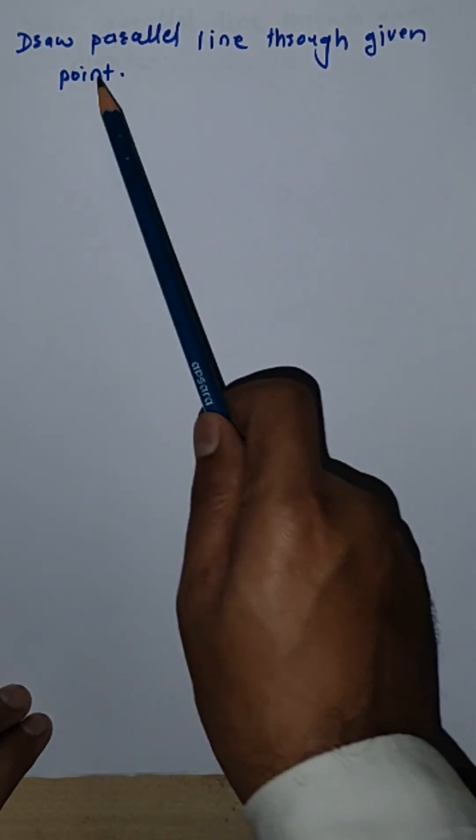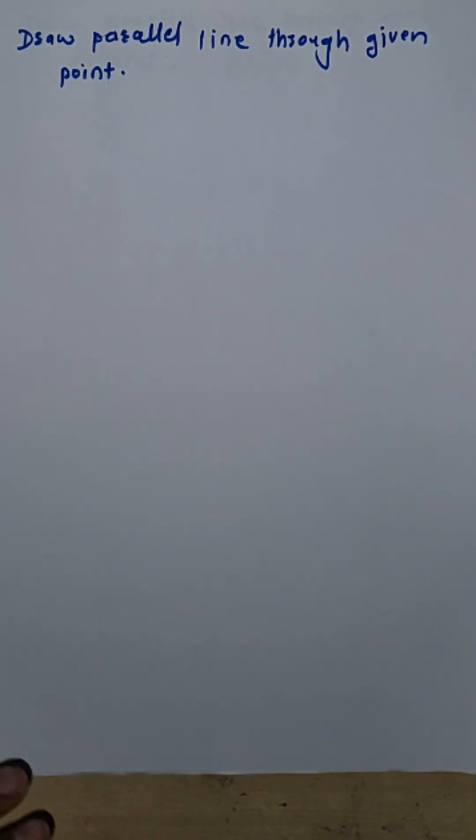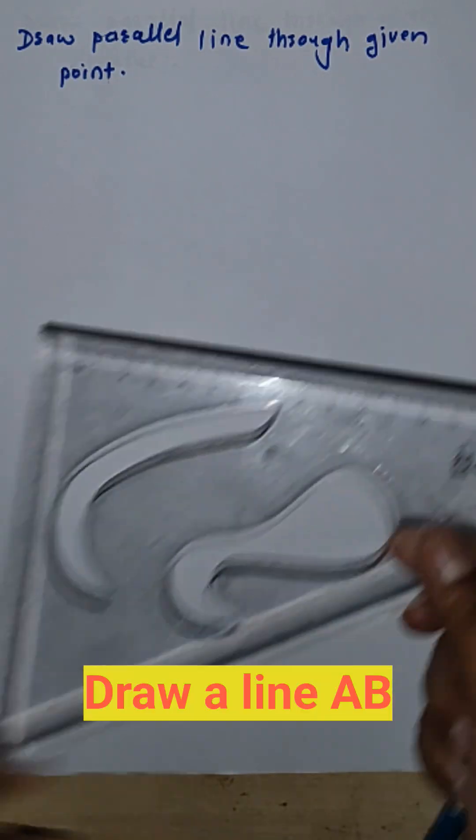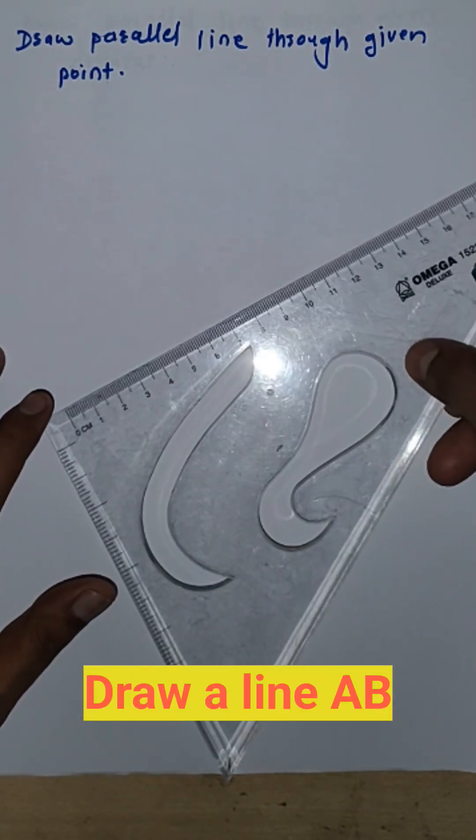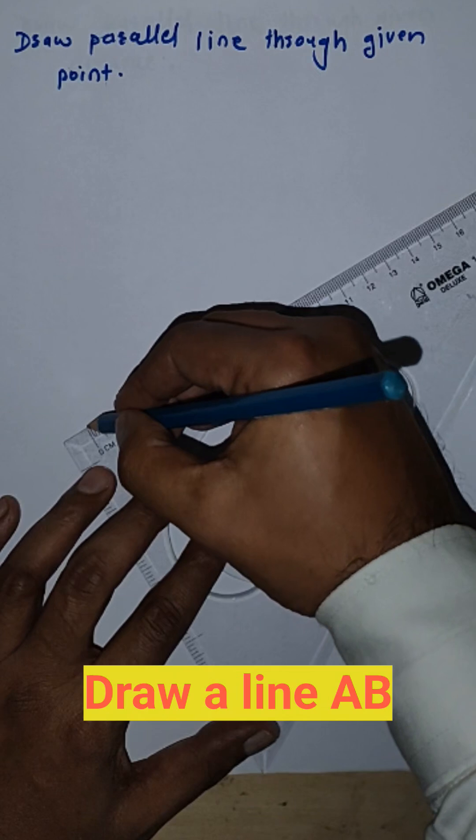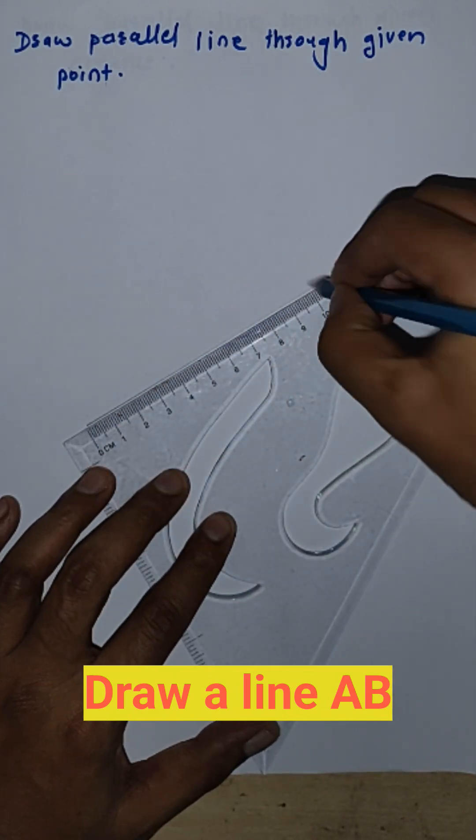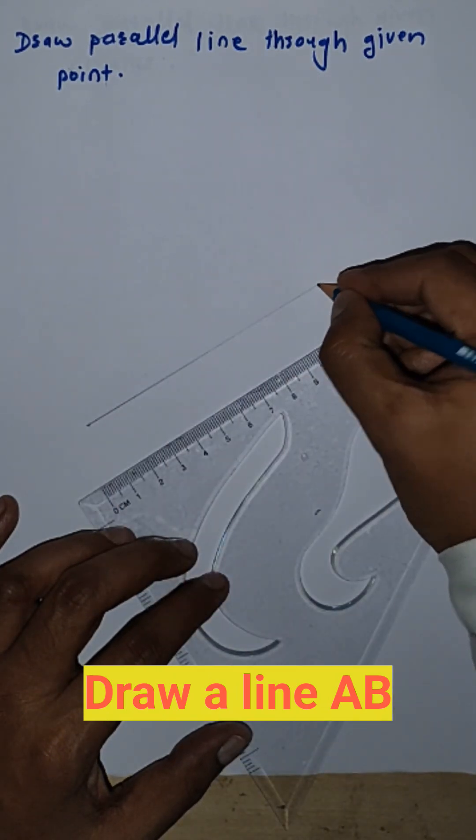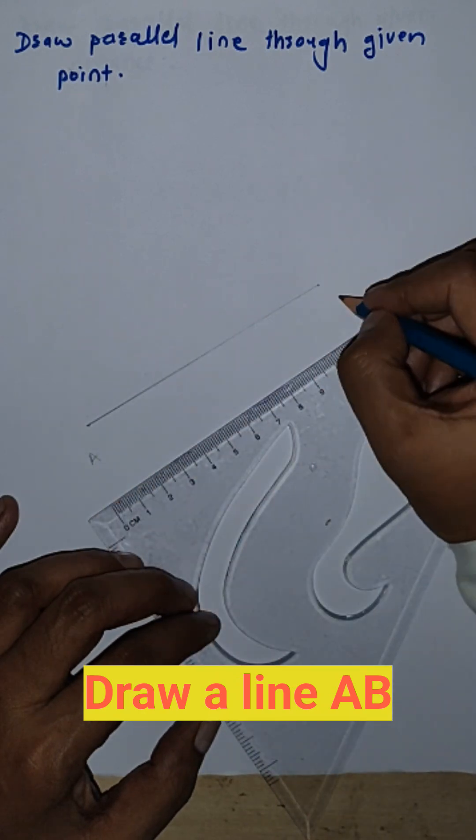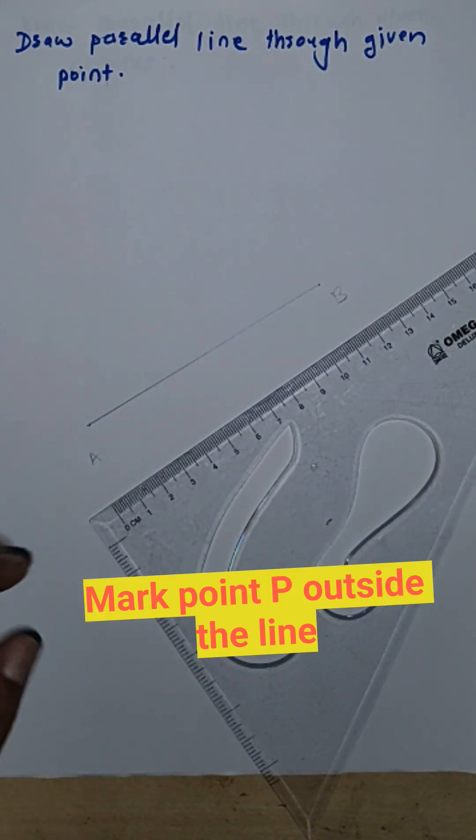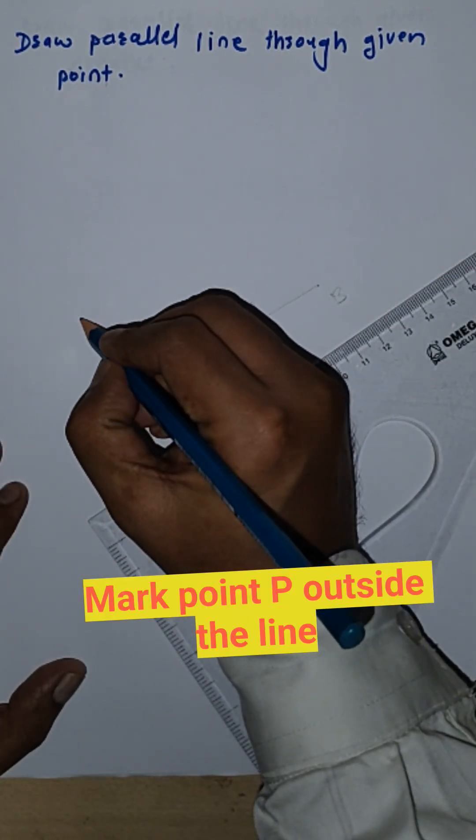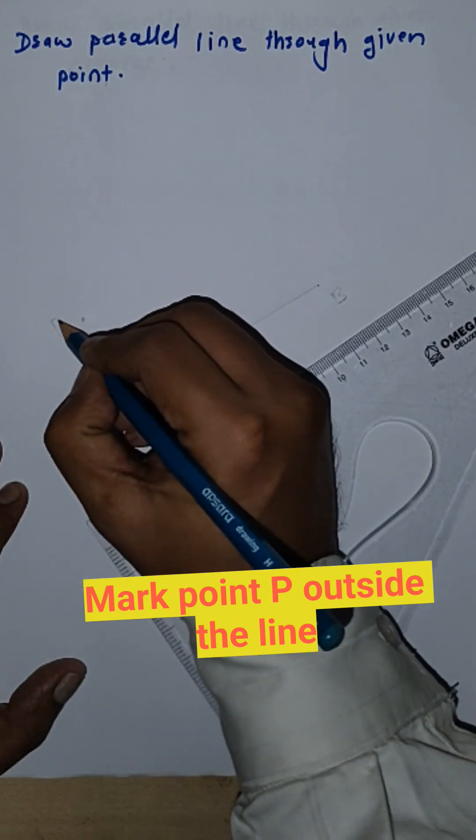Draw parallel line through given point. First, draw line AB of any length. I have taken point P.